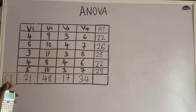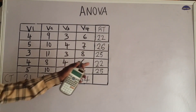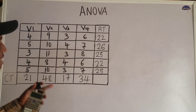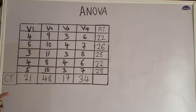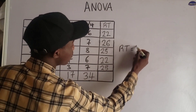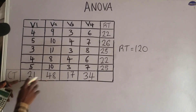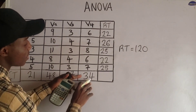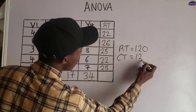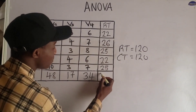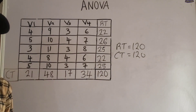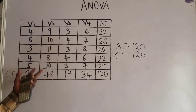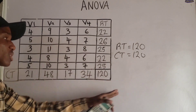After getting the row total and the column total, the next step is to check whether the row total equals the column total. When I summed the row total, I got 120. Checking the column total: 21 + 48 + 17 + 34 is also 120. So the row total equals the column total, therefore the grand total is 120. If they did not match, something would be wrong with our calculation.